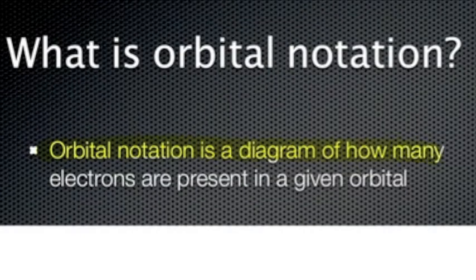Orbital notation is a diagram of how many electrons are present in a given orbital. The order of increasing energy for atomic sublevels is as follows.